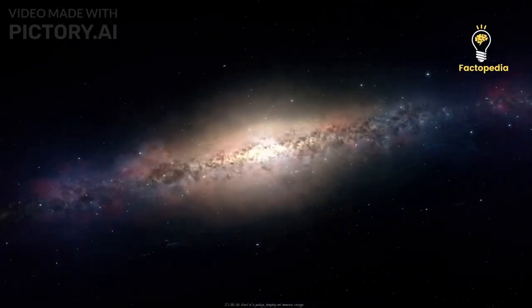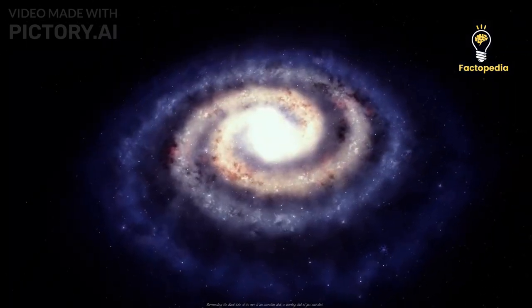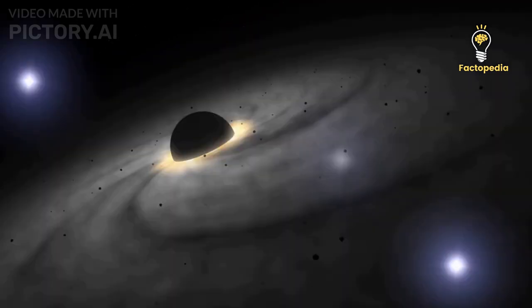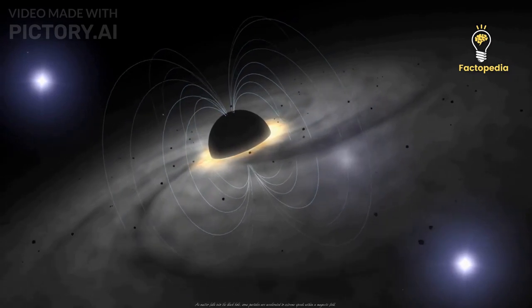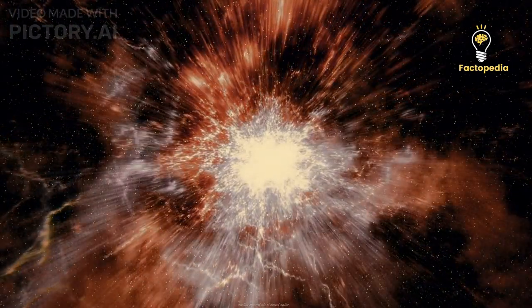It's like the heart of a galaxy, pumping out immense energy. Surrounding the black hole at its core is an accretion disk, a swirling disk of gas and dust. As matter falls into the black hole, some particles are accelerated to extreme speeds within a magnetic field, creating powerful jets of ionized matter.